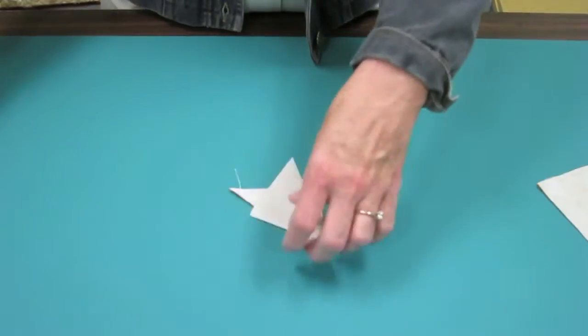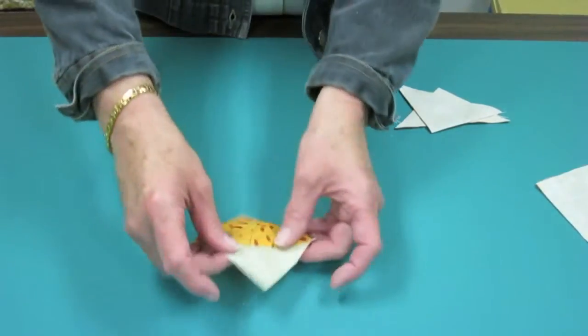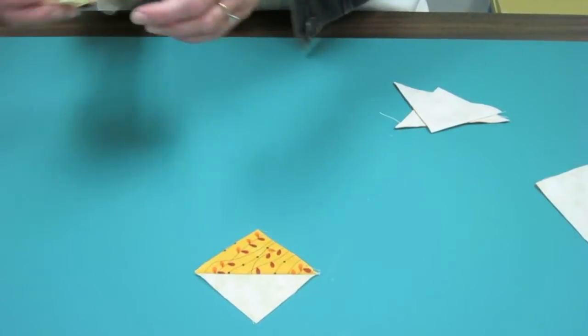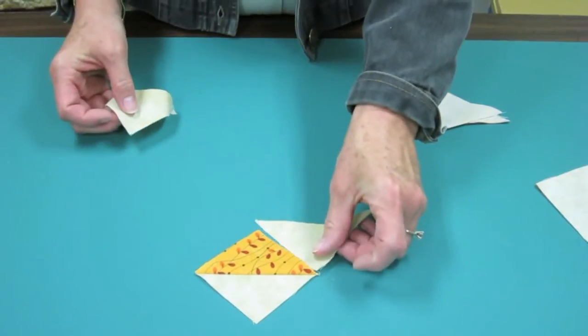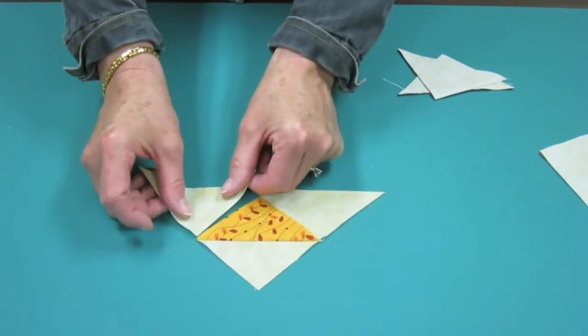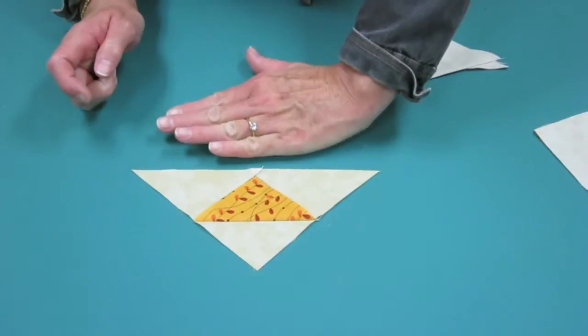For one part of this, I have a triangle square. I'm taking it, and I am sewing a triangle to adjacent sides to give me this unit.